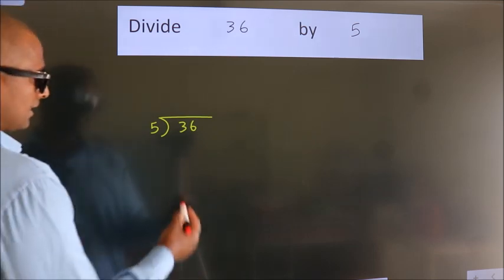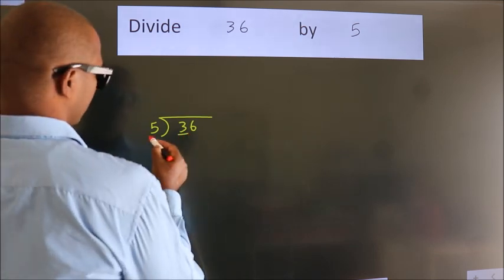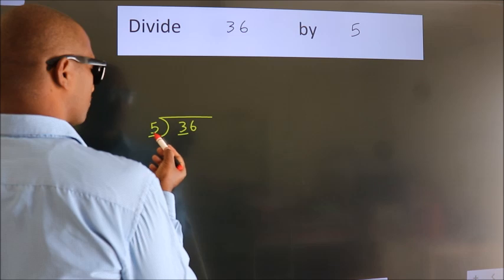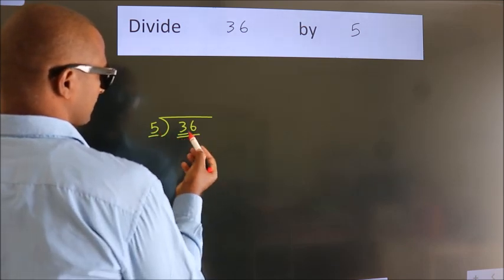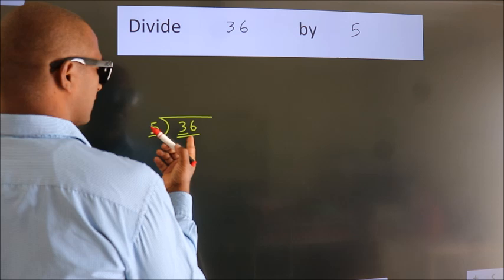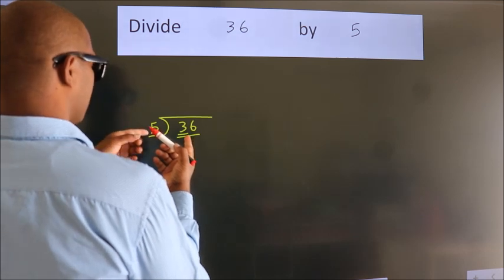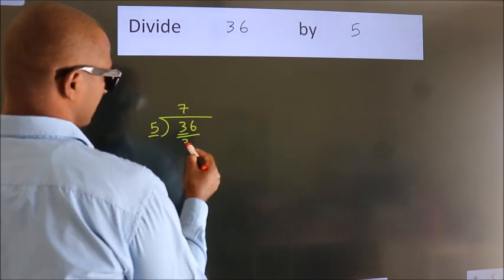Next, here we have 3, here 5. 3 is smaller than 5, so we should take two numbers: 36. A number close to 36 in the 5 table is 5 times 7 equals 35.